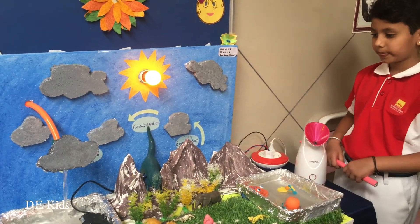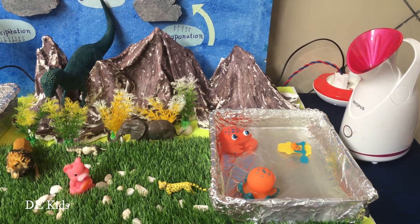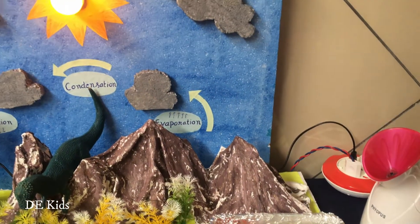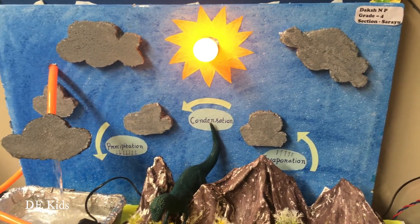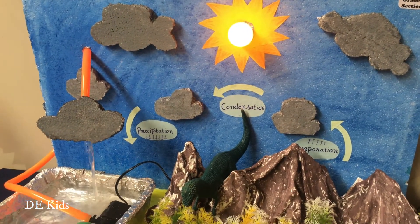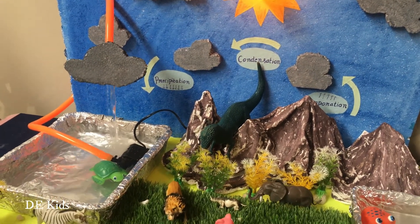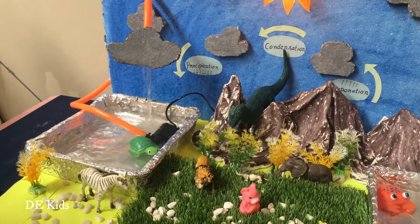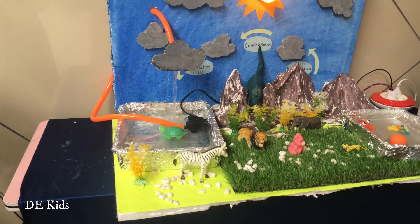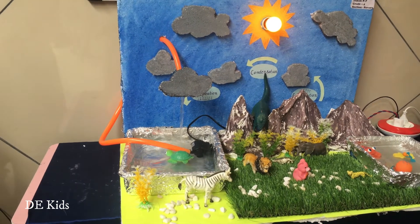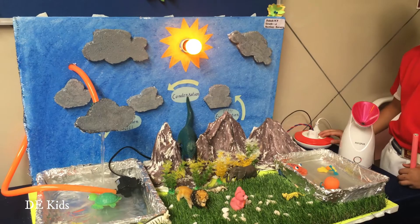There are three steps in the water cycle: evaporation, condensation and precipitation. For evaporation, I used a steamer and a bulb as the sun. For condensation, I pasted some clouds. For precipitation, I used a motor so it pumps the water and the water comes back on the ground in the form of rain. I made this mountain with the help of POP.